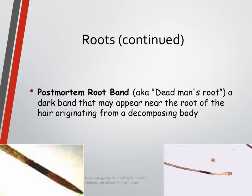Oftentimes we can tell if a hair has come from a decomposing body based on the appearance of the hair very close to the root. Hairs still attached to bodies that have been dead and decomposing take on a feature called a post-mortem root band, also known as dead man's root. It's just a dark band or dark section of the hair really close to the root, and it only happens if that hair was attached to a body that was dead and decomposing.